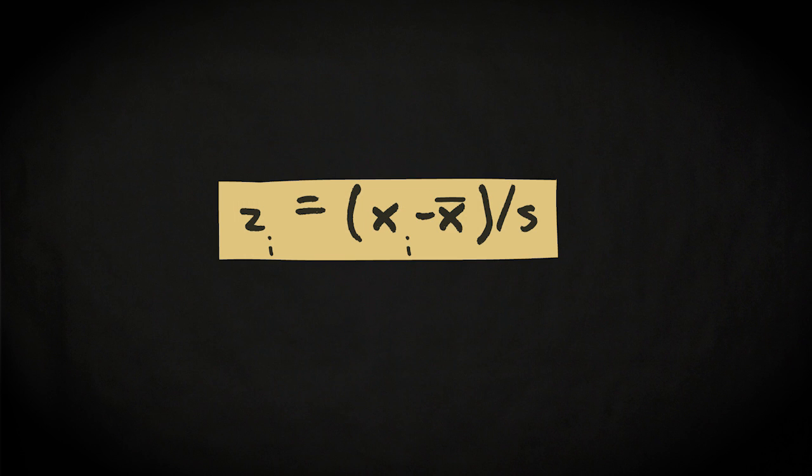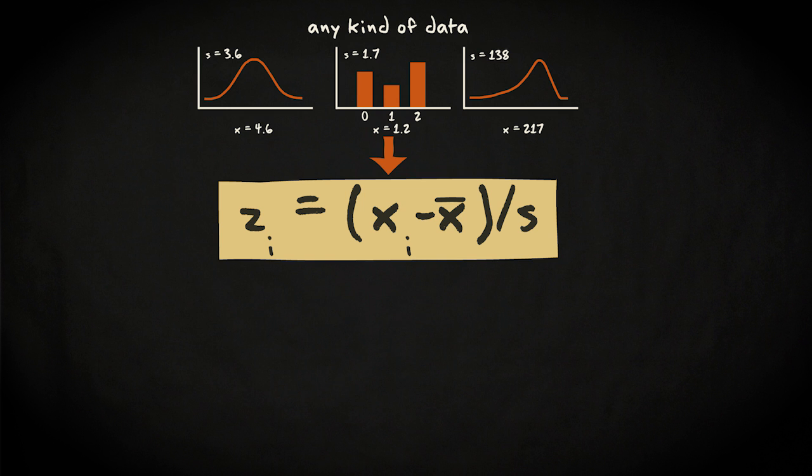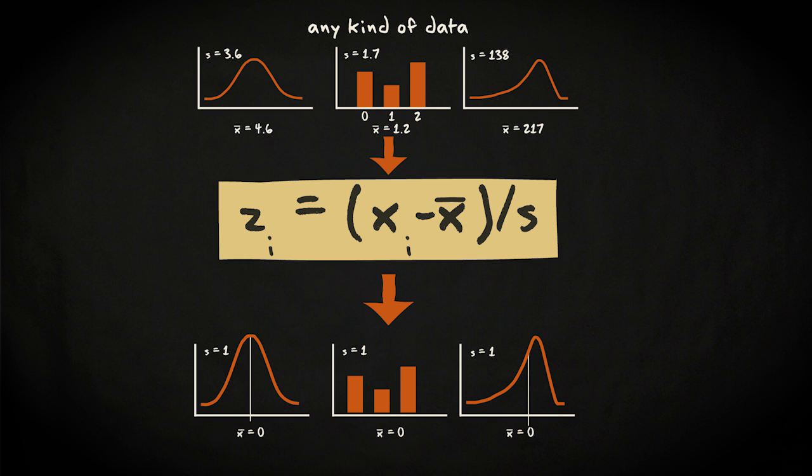As a last point, I'd like to note that the Z-transformation, which is subtracting a mean and dividing with a standard deviation, can be applied to any kind of numerical data. It results in a data set with mean 0 and standard deviation 1, and involves no assumptions about the underlying distribution of the data. It can be a good method to standardize data, to make, for example, comparisons among different case studies.